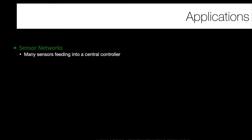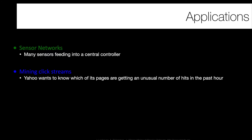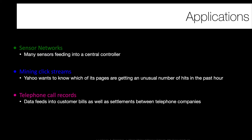Sensor networks from IoT devices can track changes in weather or environmental conditions. Mining click streams helps understand whether a website is getting more or less traffic than expected — if it's getting more traffic, the cost of advertising on that page might increase. Telephone call records or SMS data can be used to charge based on traffic between two networks. Predicting traffic in the next hour helps bid on how much to spend to send content over networks or spin up cloud compute instances. There are many reasons to process data streams.